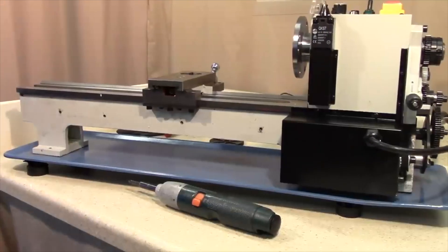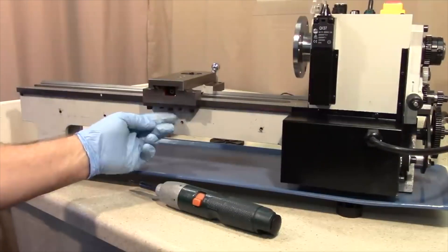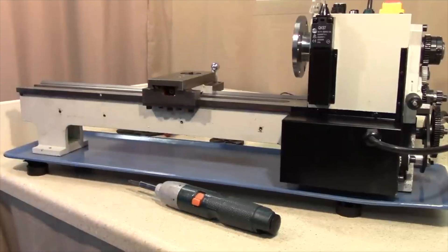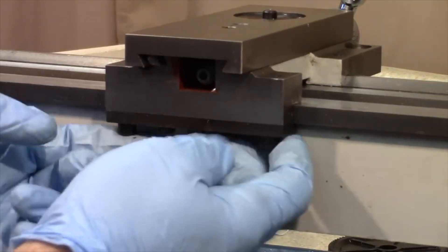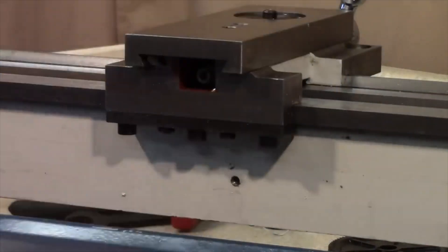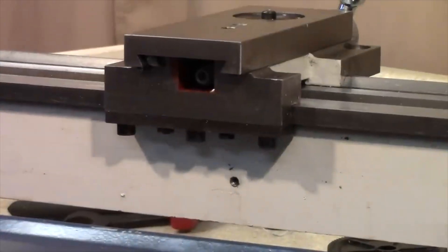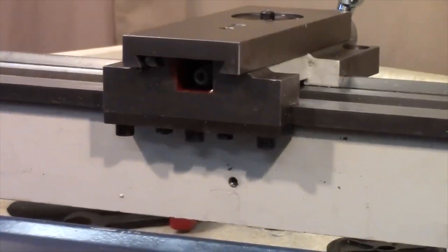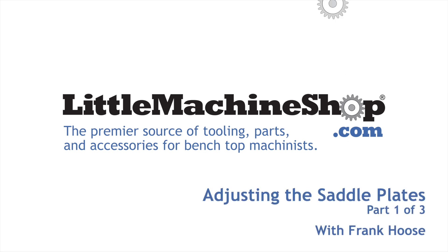Now the reason we needed to remove that back panel is as you may be able to see here there are some adjusting screws. There are three, well actually five adjusting screws and I'll take the whole saddle off and explain how that works.